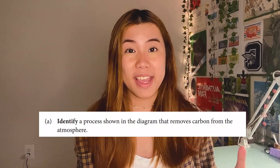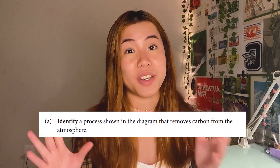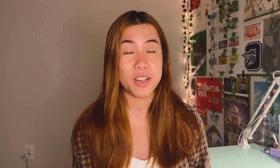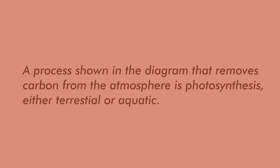First, let's start with the task verb "identify." Identify is the easiest task verb to respond to in FRQs — you just answer the question without any further elaboration. For example, if asked to identify a process shown in the diagram that removes carbon from the atmosphere, my response would be: "A process shown in the diagram that removes carbon from the atmosphere is photosynthesis (terrestrial or aquatic)." You don't have to explain how photosynthesis works — just name it in a full, complete sentence.